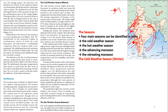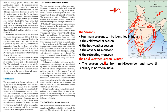When the monsoon retreats, it starts from the north and moves southward. As it retreats, the air flows from land toward the ocean so it does not carry much moisture. However, when this retreating Bay of Bengal monsoon reaches the Coromandel coast, it picks up moisture from the ocean and causes significant rainfall in Tamil Nadu during the winter season.